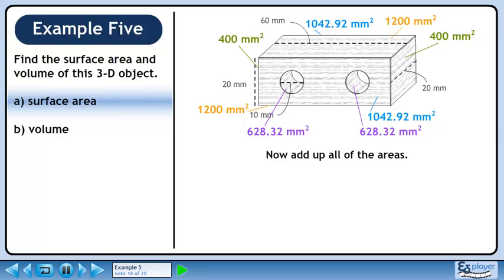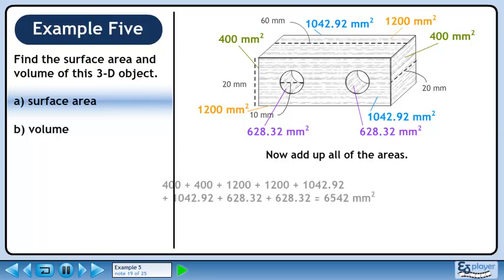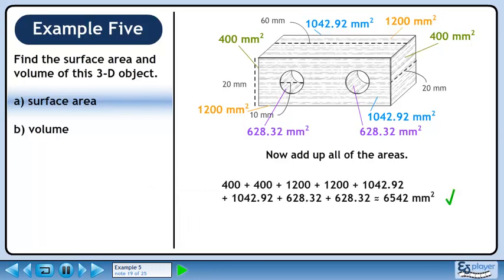Now add up all of the areas. This gives us a surface area of approximately 6542 mm² for the composite object.